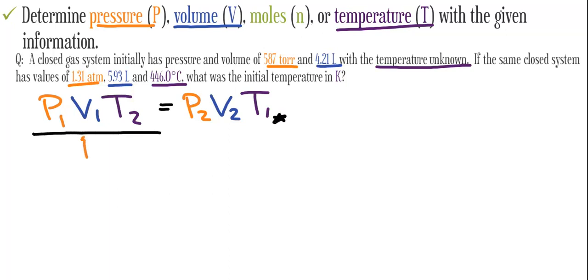We can solve for T1 by dividing both sides by P2V2. Remember, the 1s are the first set of conditions and the 2s are the second set of conditions.